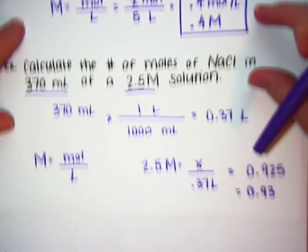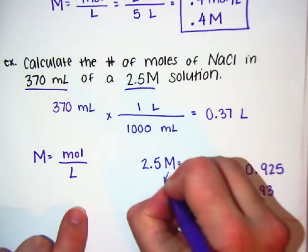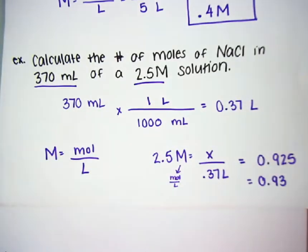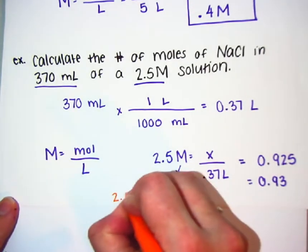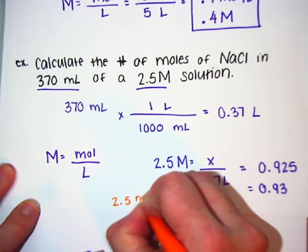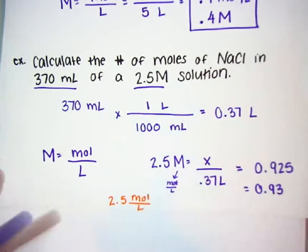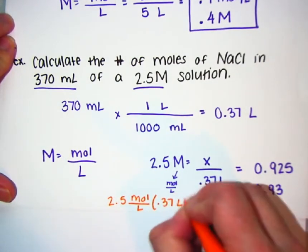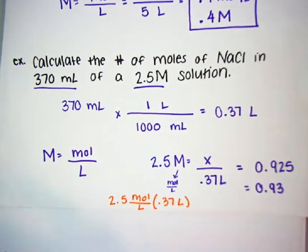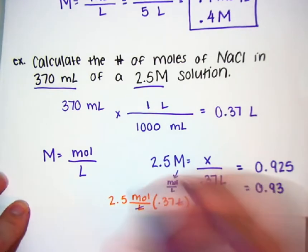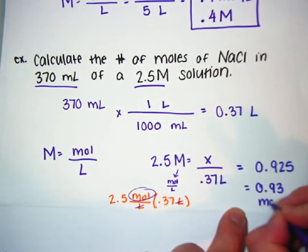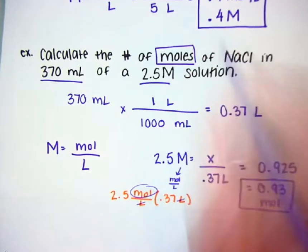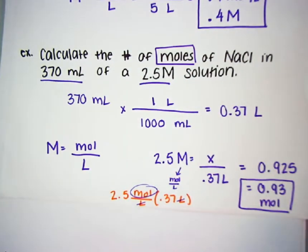Let's talk about what happens with our units. Molarity is moles divided by liters. So if I have 2.5 moles divided by liters, and I'm multiplying it by 0.37 liters, notice that liters cancel out and we're left with moles — which is what we're solving. Final answer: 0.93 moles. I just wanted to show you how we get to those units.